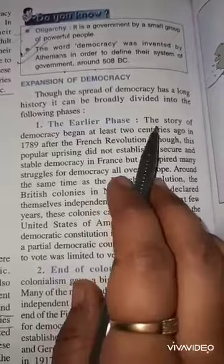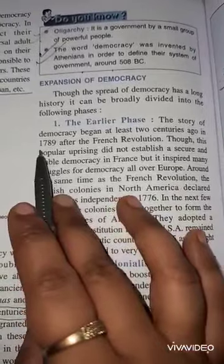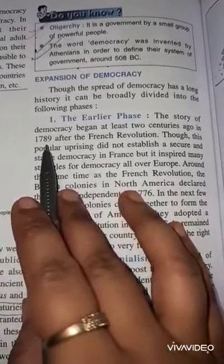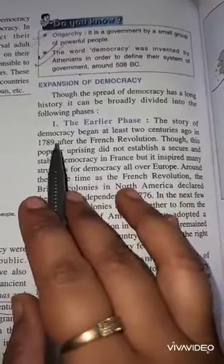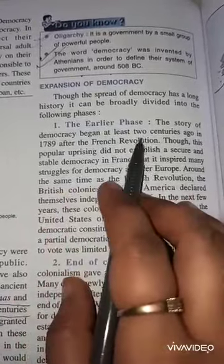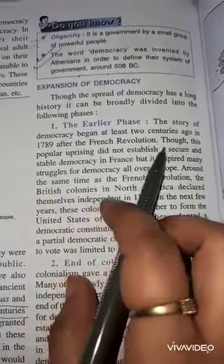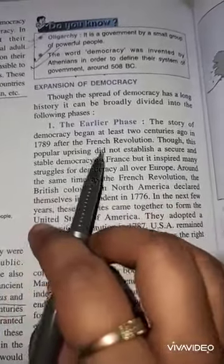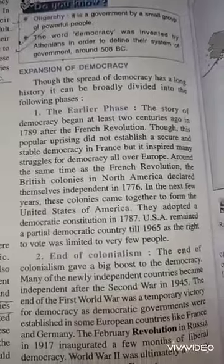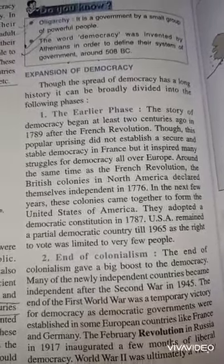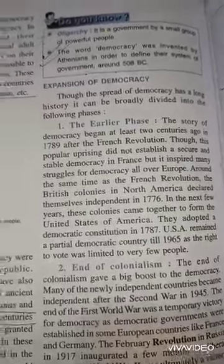Let us see about the early phase. The story of democracy began at least two centuries ago, in 1789, after the French Revolution. Though this popular uprising did not establish a secular and stable democracy — meaning the democracy pattern was not established in a secular and stable manner in France.